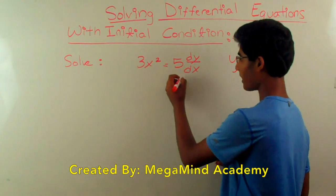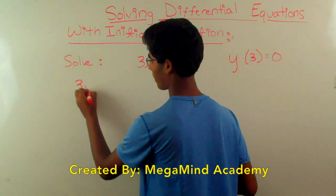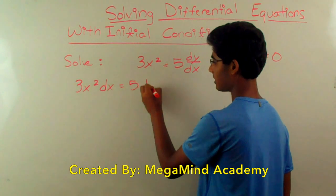So we multiply both sides by dx to get 3x squared dx is equal to 5 dy.